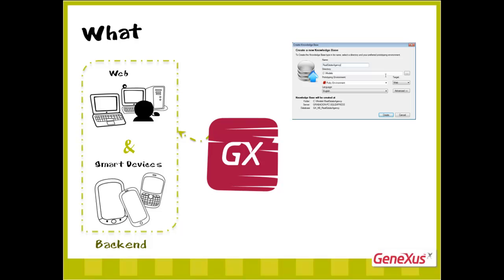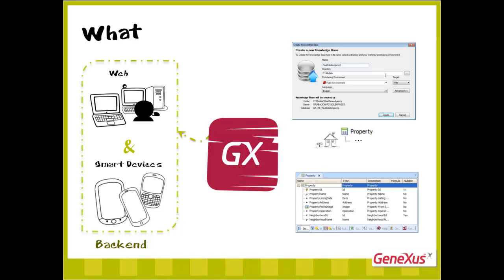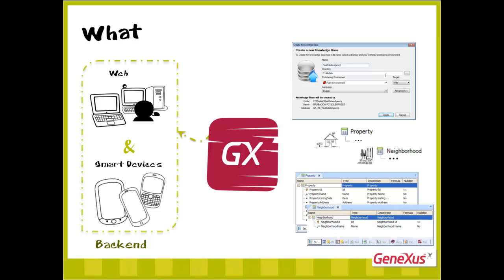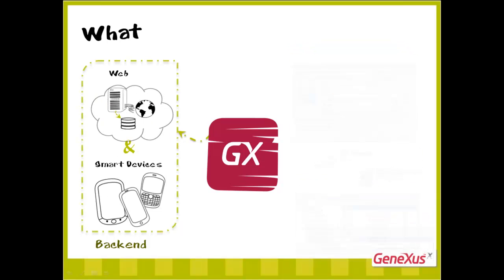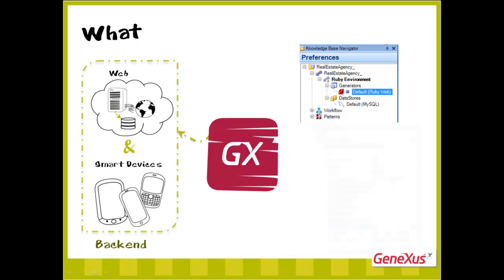For this purpose, we create a KB with the property transaction to record the real estate properties for sale or for lease, and the neighborhood transaction to keep a record of the neighborhoods. We have also defined that the web backend will be generated in Ruby in the cloud.